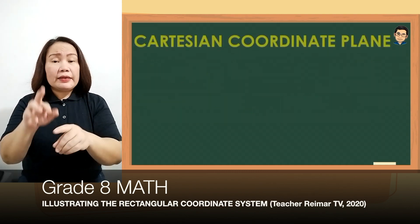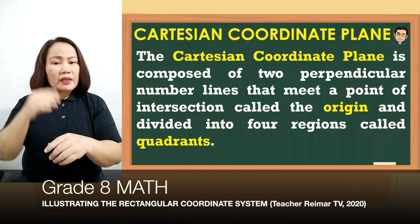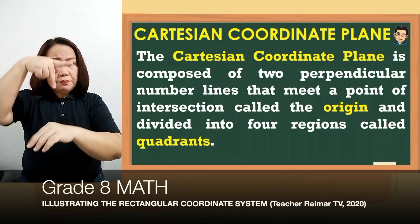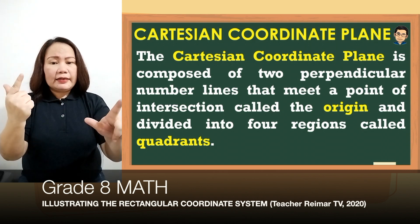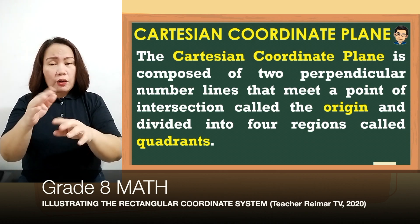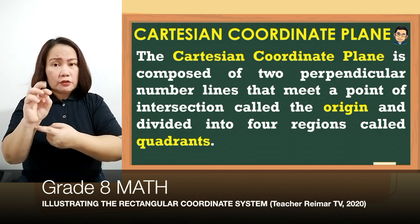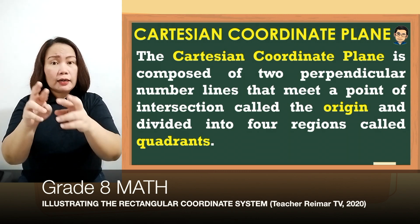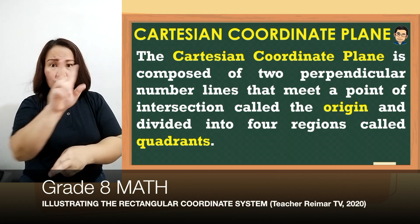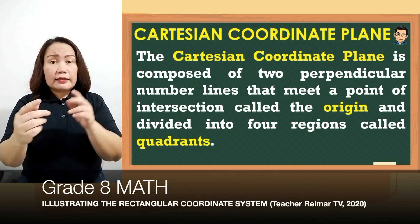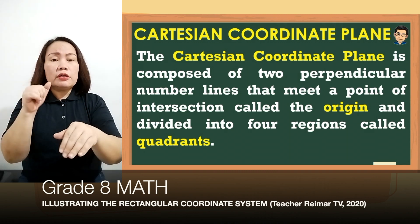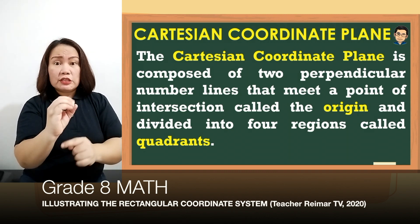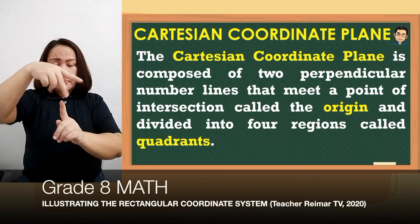The Cartesian coordinate plane is composed of two perpendicular number lines that meet at a point of intersection called the origin and divided into four regions called quadrants. Perpendicular lines are lines na nag-intersect to form right angles, and yung intersection point is what we call the origin. Nung nag-intersect yung dalawang perpendicular lines, nabuo yung four regions, which we call quadrants.